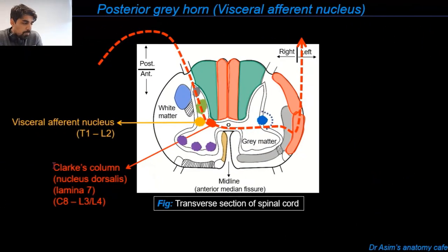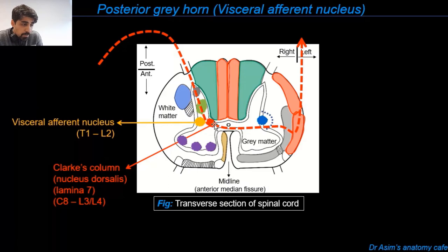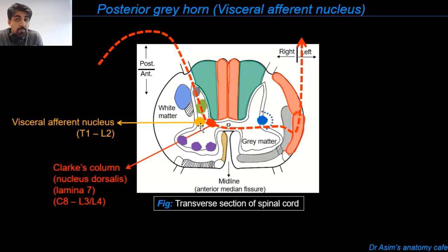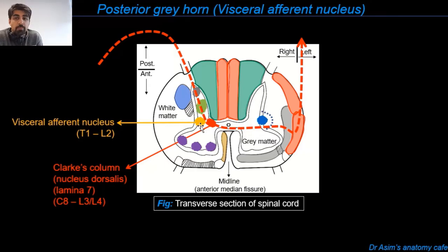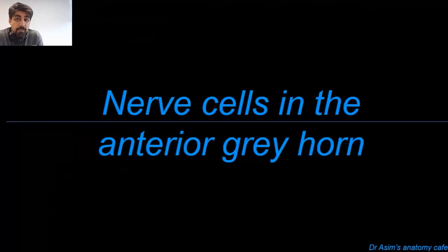Then we have the visceral afferent nucleus, situated just lateral to Clark's column, more or less at the base of the posterior gray horn. It is color coded in yellow. It extends from T1 to L2 — the first thoracic to the second lumbar segment — and therefore does not extend throughout the length of the spinal cord. It is believed to be associated with receiving visceral afferent information.